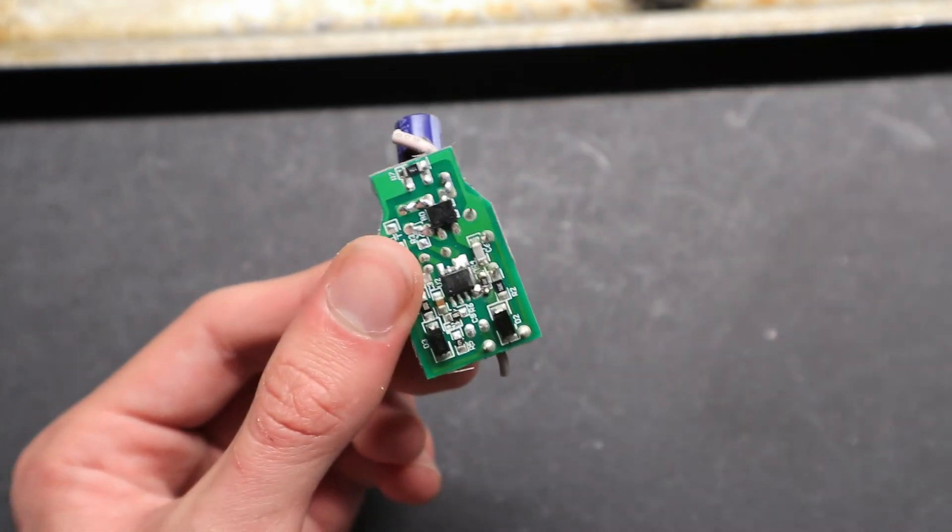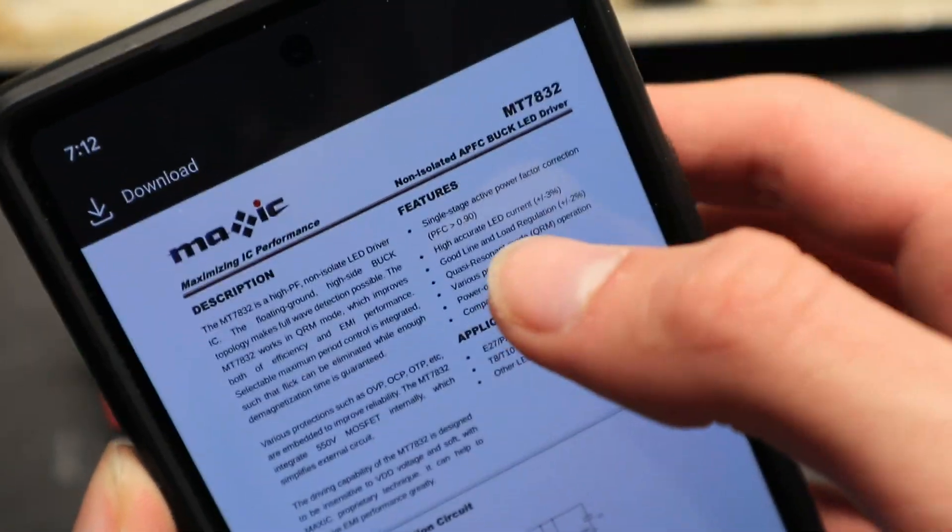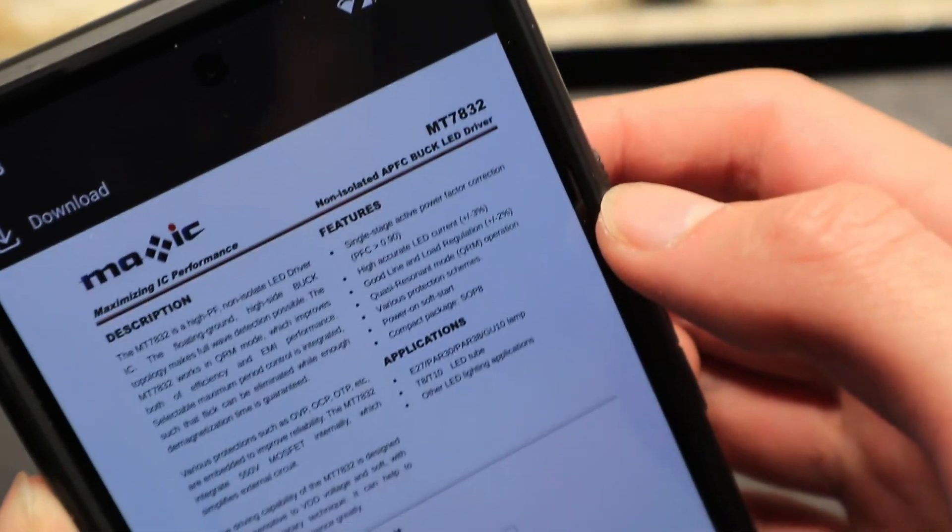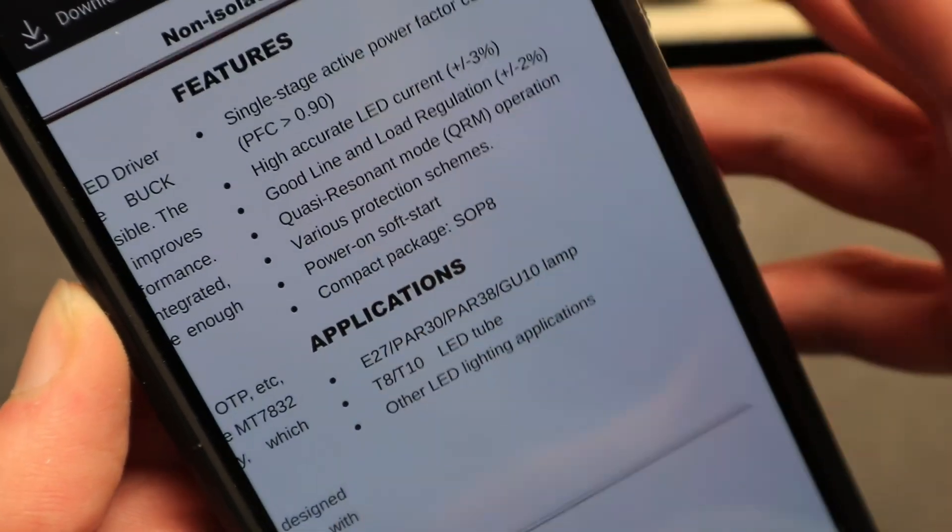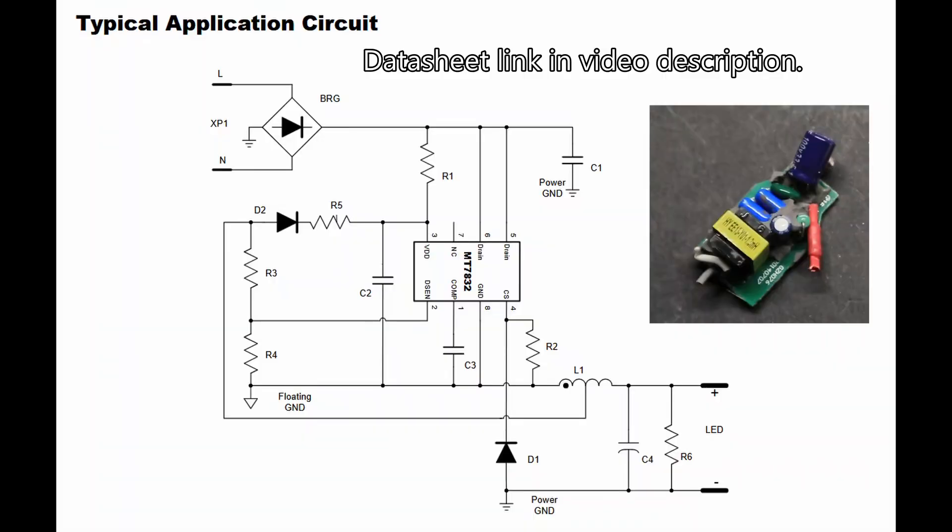The controller IC is an MT7832, which is a non-isolated active power factor correction LED driver, and it is used in an E27 LED lamp as this application. The datasheet also includes a sample application circuit, which some variation of it is likely used in the bulb. Power supply circuit is a step-down switching voltage converter using the inductor to help with voltage conversion.